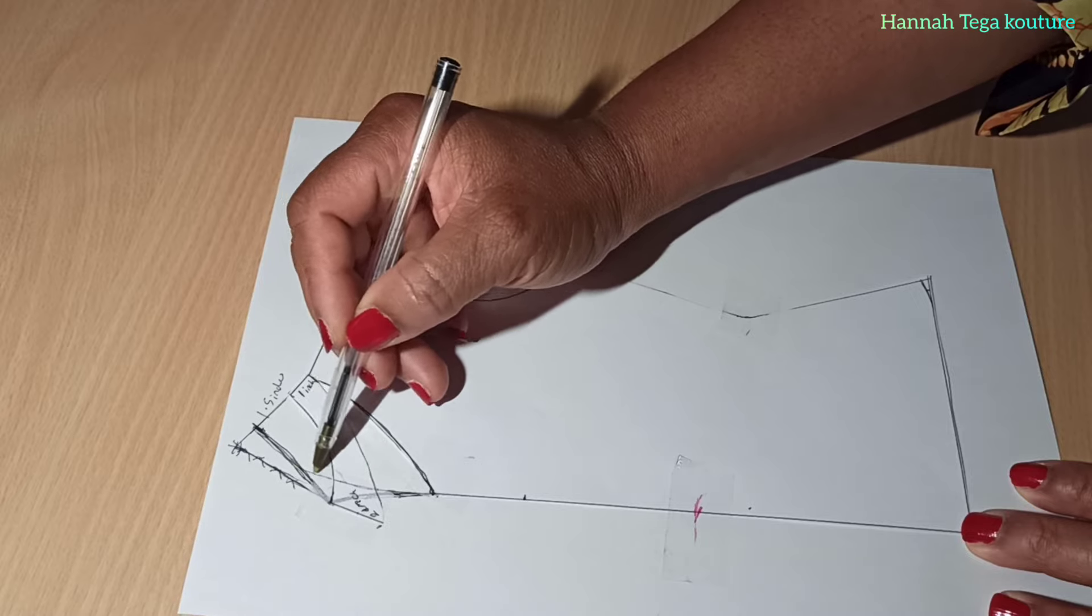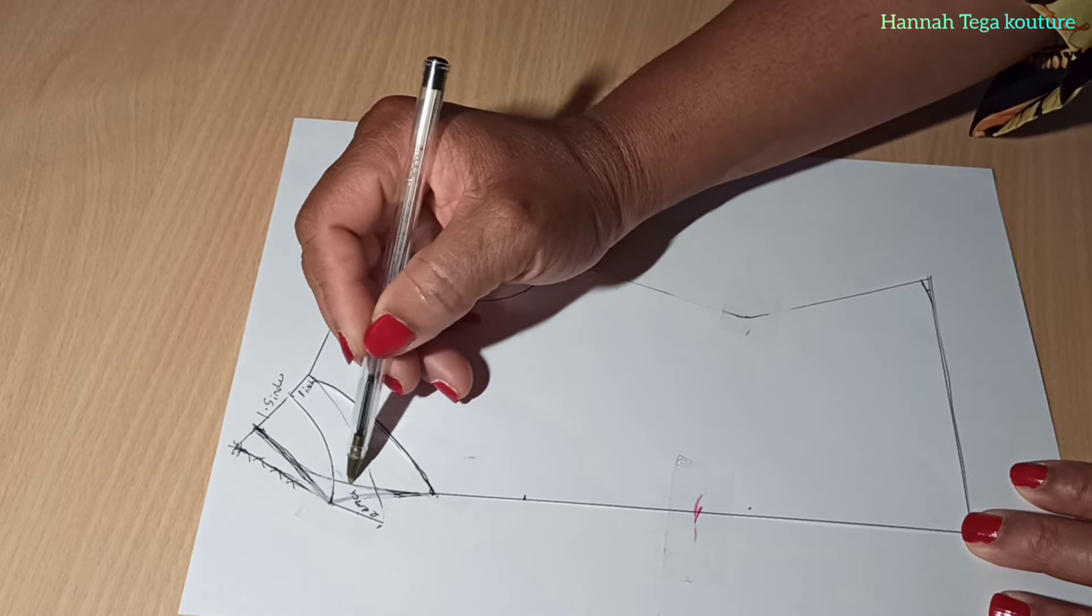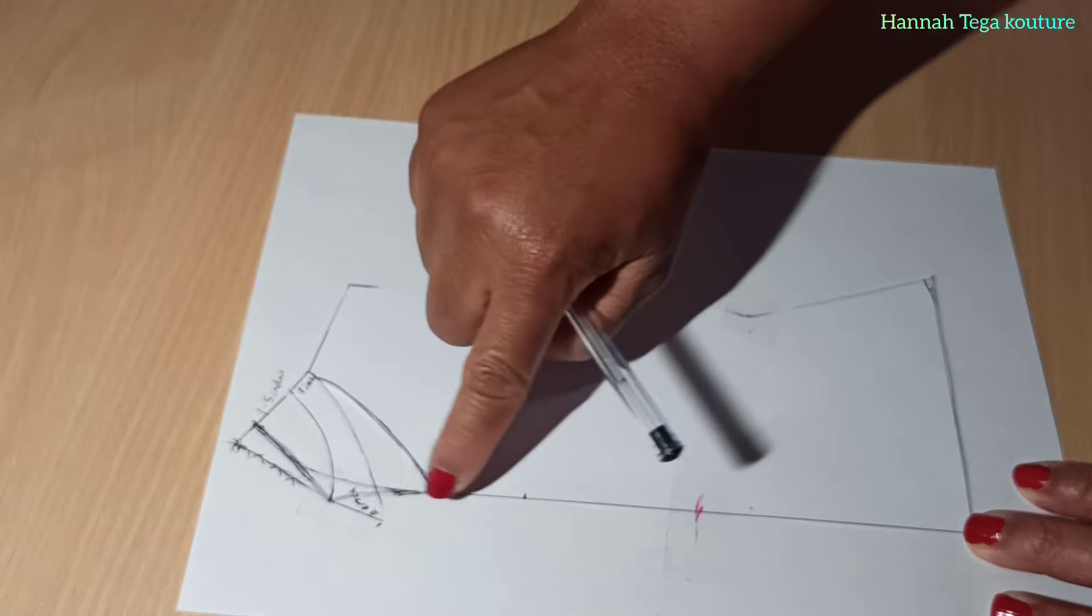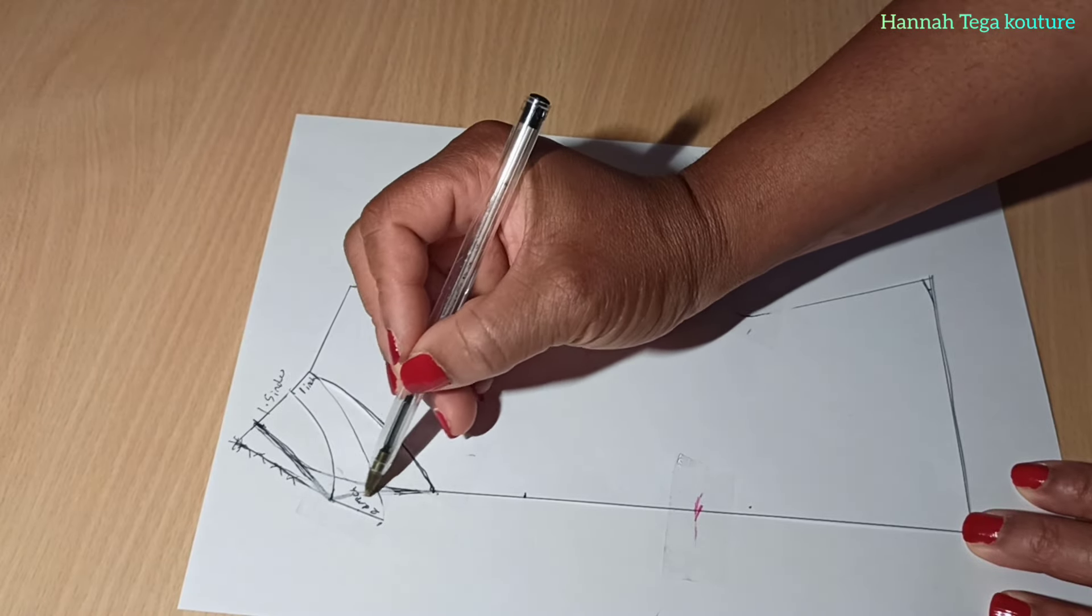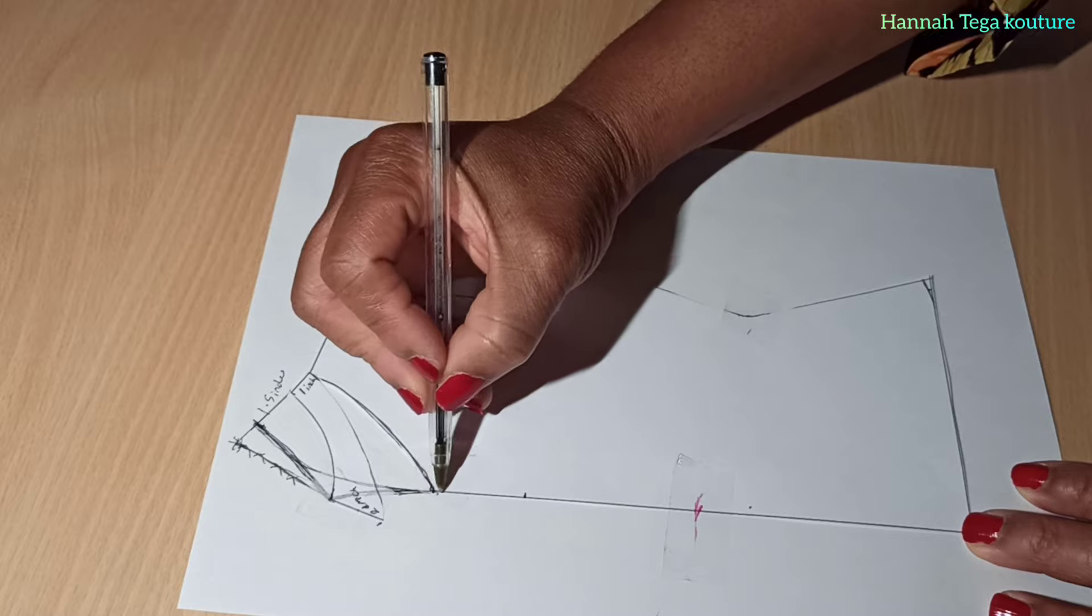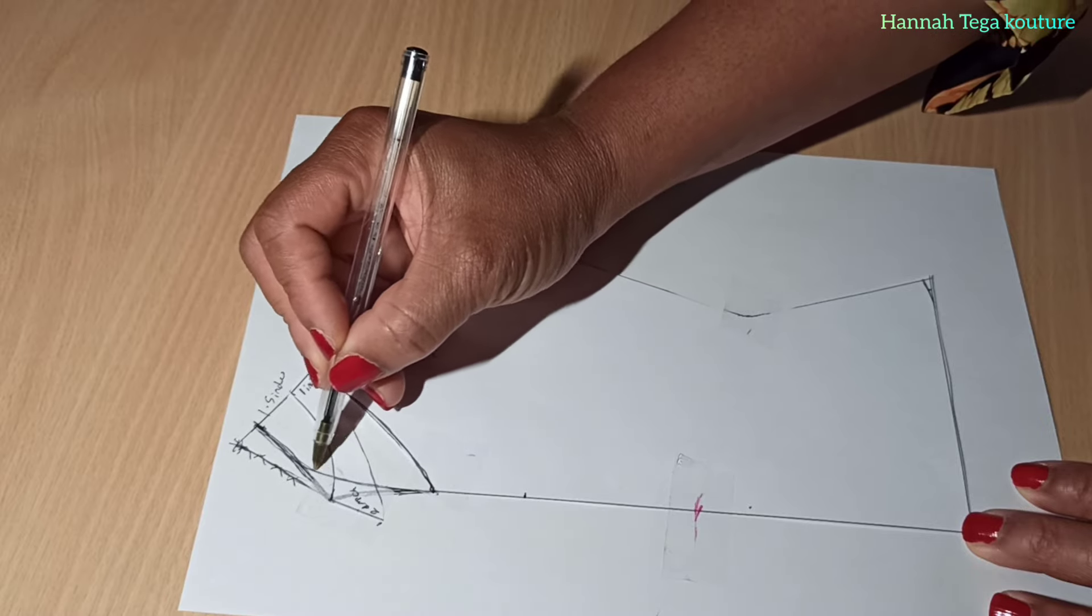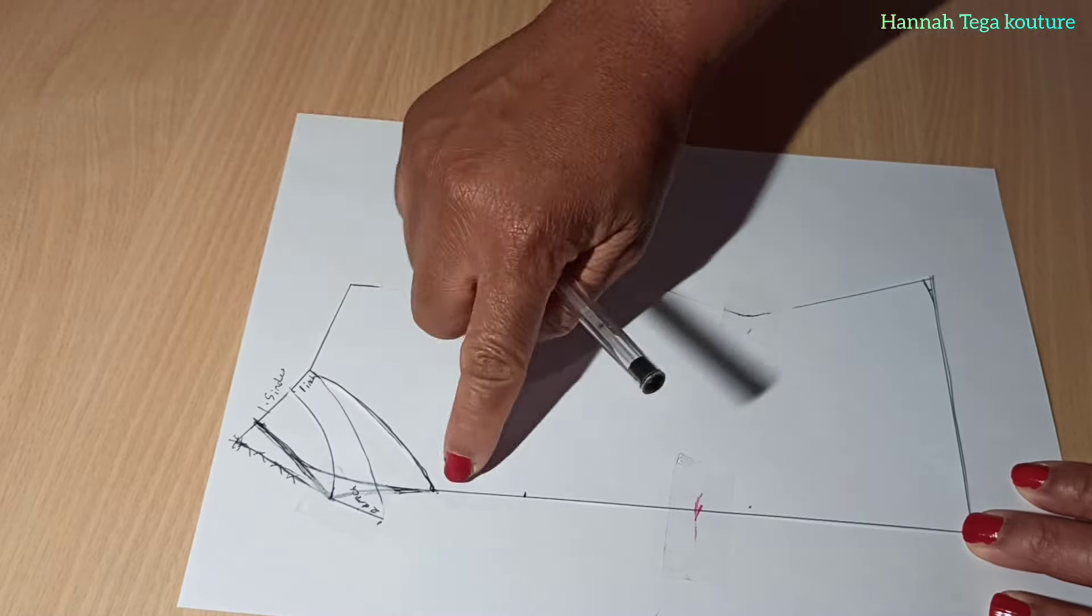So you want to curve it out like that and connect it to the 1.5. There you have it. So you would have a curved collar like that that runs all the way up to the 1.5 or the two inches you've drafted.